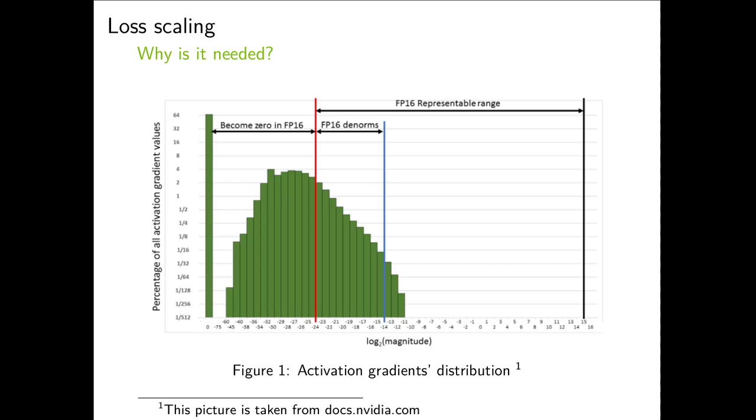Finally, loss scaling. Why do we need it? I borrowed this picture from NVIDIA Docs because it shows very well why. We can see that some gradients can become pretty small while still being significant and important for optimization process. In fact, they are so small that they're not representable in FP16 range – they are indistinguishable from zero. At the same time, you see that on the right side of this picture we have a lot of unused bits. So ideally we want to shift this histogram to the right. That's exactly what loss scaling does.